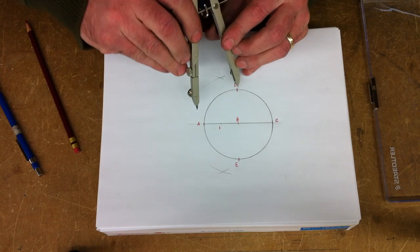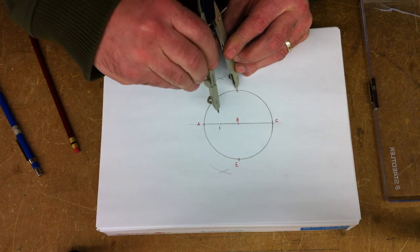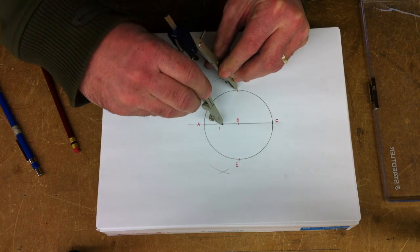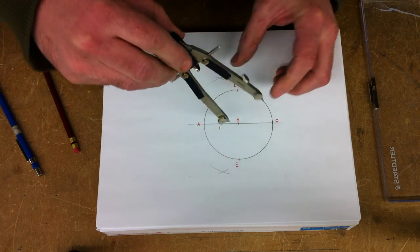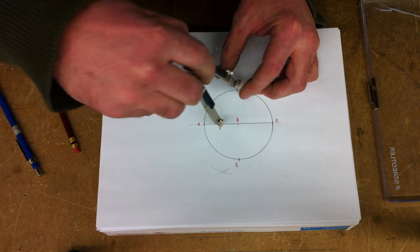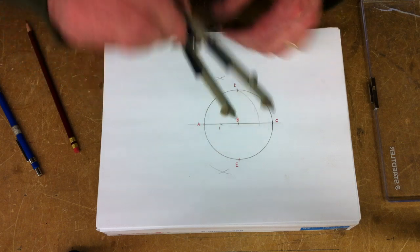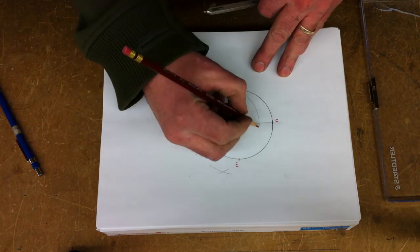We now take the dimension 1D and swing 1D through line BC, in which we create a new point 2.